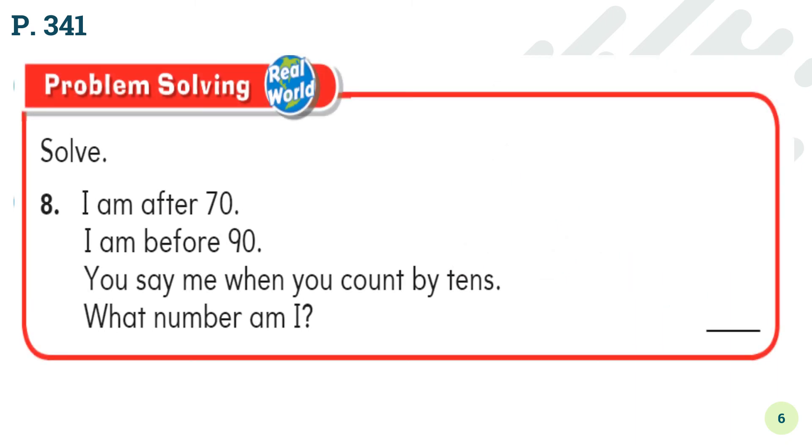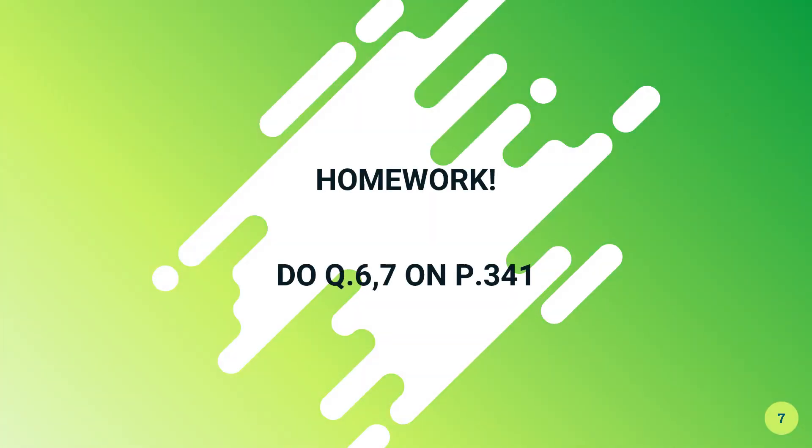Now let's look at page 341, question 8. What does question 8 say? I am after 70, I am before 90. You say me when you count by 10s. What number am I? So this is a riddle that we have got. We are looking for a number that comes after 70 and it should come before 90 and you are counting by 10s. So let's start with 70. What comes after 70 if you are counting by 10? You get 80. And let's add 10 more to our 80. What should I have? You get 90. So this is a number that is after 70 but before 90. And what is that number? You can see it on the screen by now. The answer is 80.